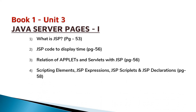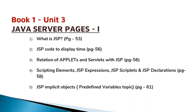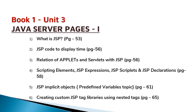Next, you should know what are scripting elements: JSP expressions, JSP scriptlets, and JSP declarations — these are small topics. Please go through page numbers 58 and 59. Next, you should know JSP implicit objects, that is predefined variables, available on page number 61. The last topic in this unit is creating custom JSP tag libraries using nested tags, available on page number 65.